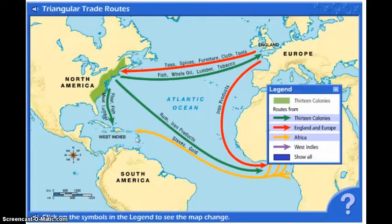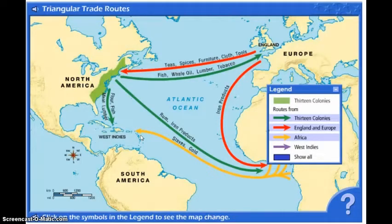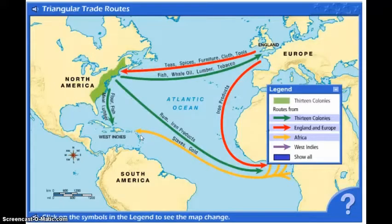From Africa, the route goes straight to the West Indies. This route is known as the Middle Passage, and it was a horrible trip from Africa to the West Indies. Men and women were packed on these boats like cattle, treated as animals more than as people, and there were significant numbers of deaths as a result of this trip. The slave traders had to have absolutely hardened hearts — it's hard to imagine one group of people doing this to another group of people, but they did.